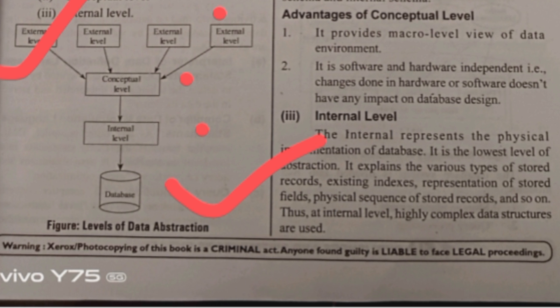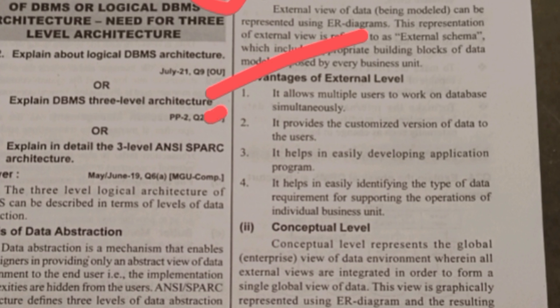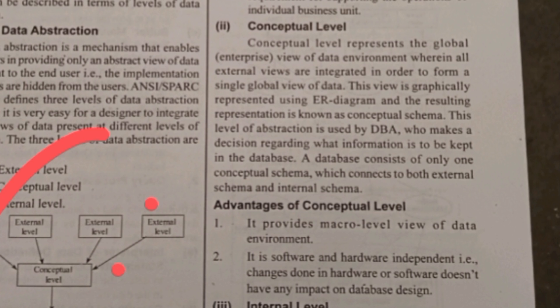The advantage of External Level is that it allows multiple persons to access the database. While checking Osmania University results, thousands or lakhs of students check their results at the same time — everyone has access. That is the advantage of External Level.